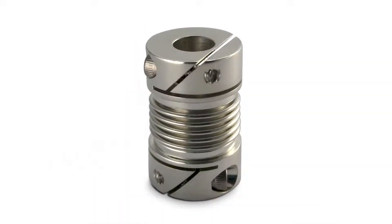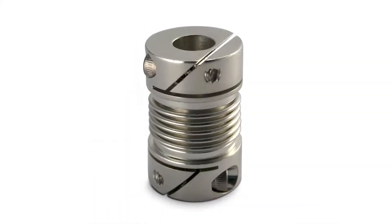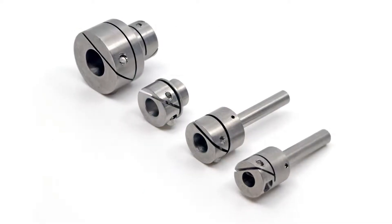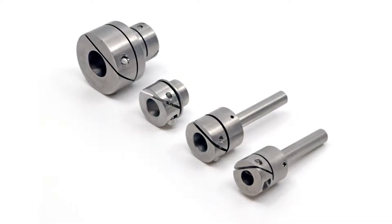Fairlock hubs replace other fastening methods such as set screws, keys, pins, debore, and external clamping devices.